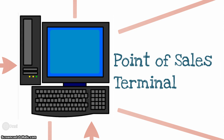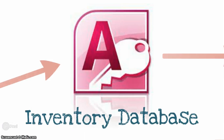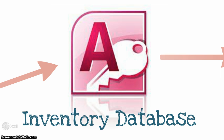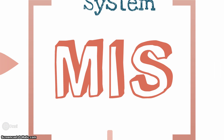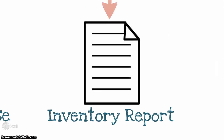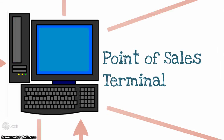Once this purchase has been recorded, it needs to access the inventory database. The inventory database records how many of that specific product is on hand. This is important to managers because once that inventory gets to zero, more of that product needs to be ordered. The management information system can be in place to automatically order new products once the inventory has reached zero, and this report can also be created so that the manager can see how much of each product is left each day.